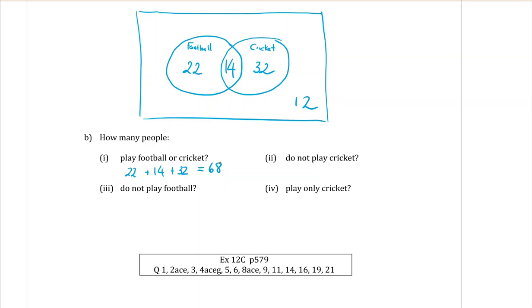Part two, how many people do not play cricket? Do not play cricket. There is actually two numbers. We can't have anything in the cricket circle, but it would be the 22 and the 12. 22 plus 12 makes 34 people.